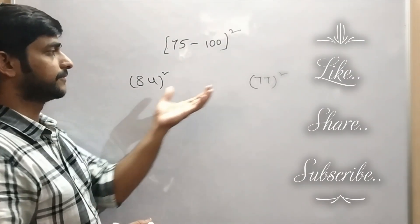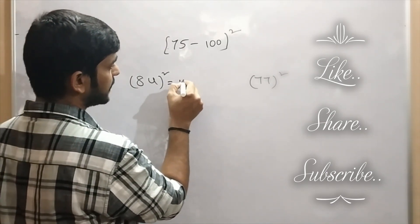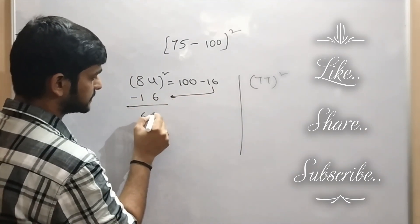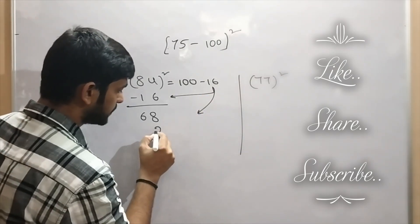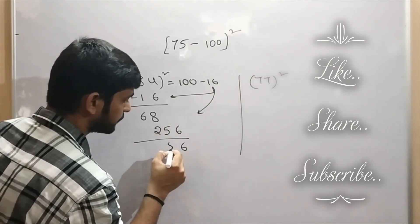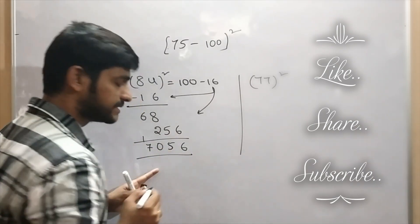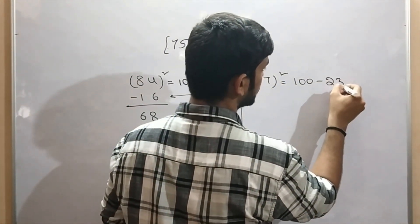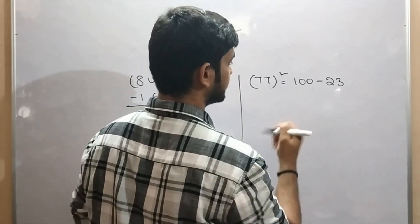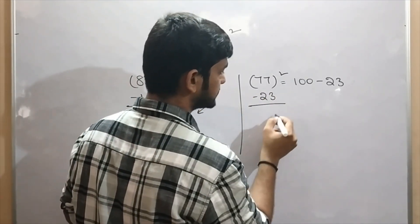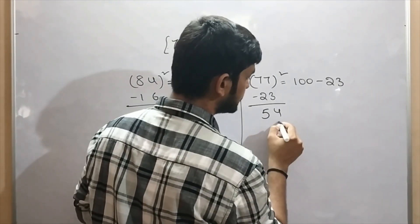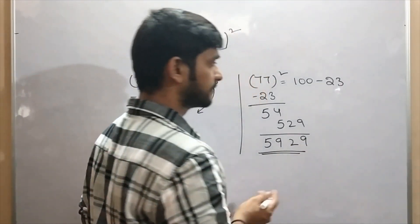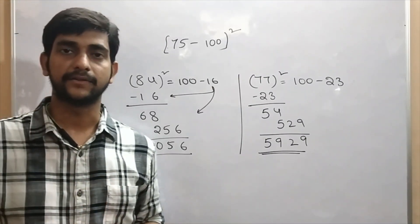Let's take the numbers 84 and 77. 84 we can write it as 100 minus 16. Subtract this 16 from 84 — here we are getting 68. And 16 squared will be 256. So 7056 will be the answer for 84 squared. Next, 77 squared — we can write it as 100 minus 23. Subtract 23 from 77 — here we are getting 54. And 23 squared will be 529. So 5929 will be 77 squared.